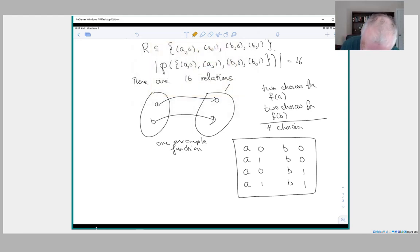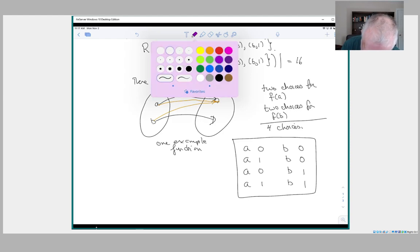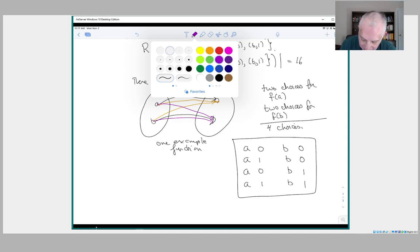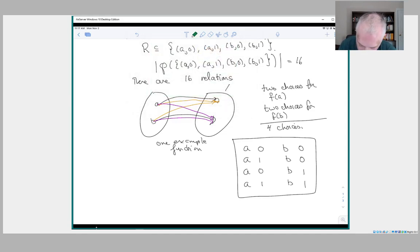And I guess I have probably enough colors here. I can draw them in different colors. So I've got A to 0. So the black one is A to 0 and B to 1. The gold one is A to 0 and B to 0. The purple one is A to 1 and B to 1. And I think the one which is missing is the one where B goes to 0 and A goes to 1. So those are the four possible functions. So only one quarter of the relations are actually functions.